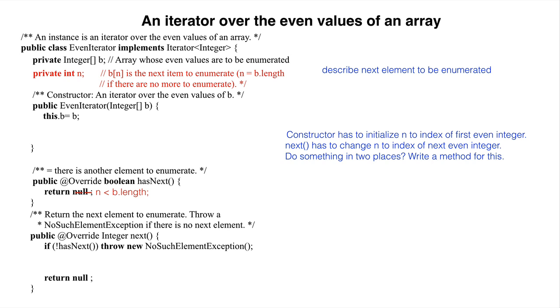Also, method next will have to change n when it returns B sub n. Since n has to be changed in two places, we write a method for it.